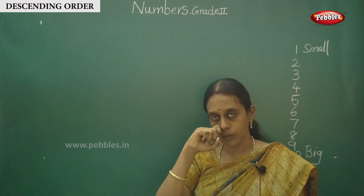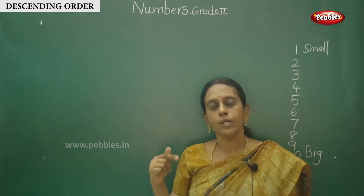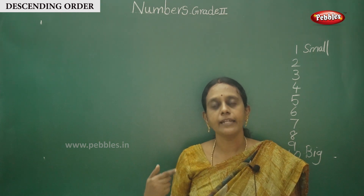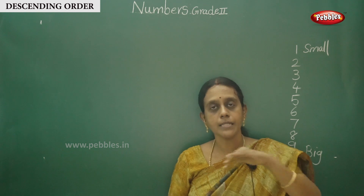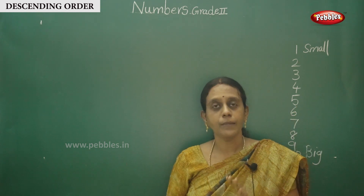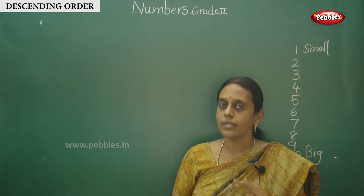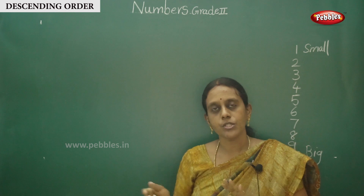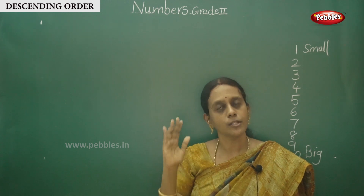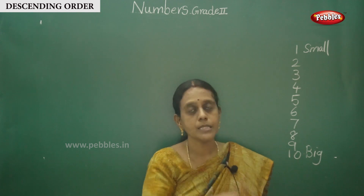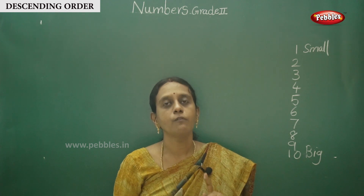Okay, descending order: 1 to 10 — from 1st standard and 2nd standard, practice writing numbers in descending order. This is for actual memory improvement. Normally, 100, 99, 98, 97, 96 — saying numbers backwards orally. That means descending: count down and say it. So: 10, 9, 8, 7, 6, 5, 4, 3, 2, 1.